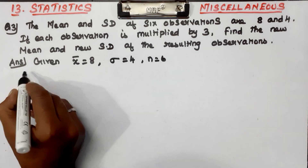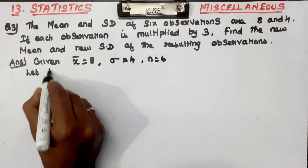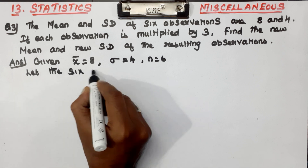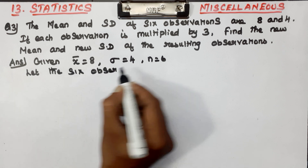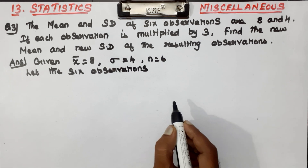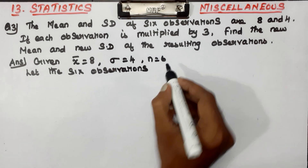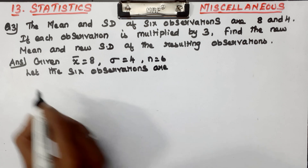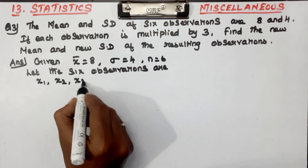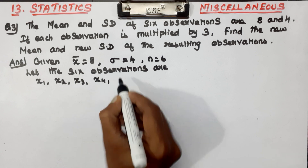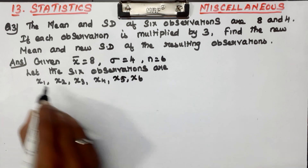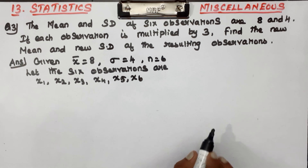Let the 6 observations be x1, x2, x3, x4, x5, and x6. These are our first observations.